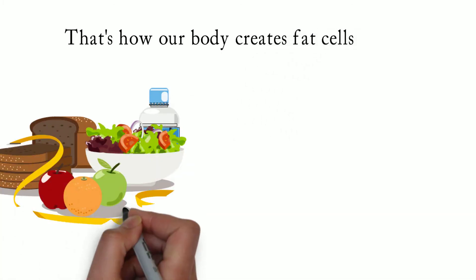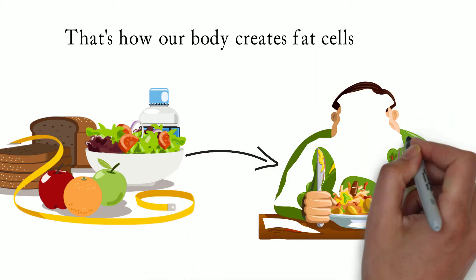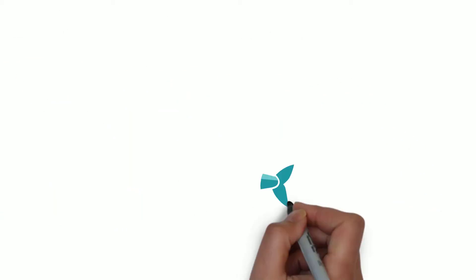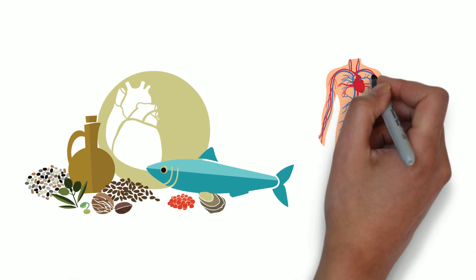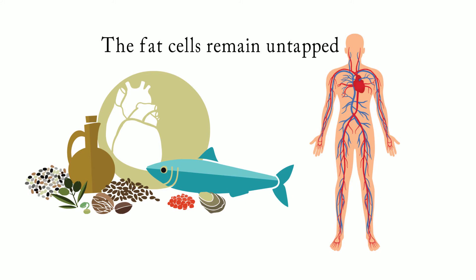The longer we keep having excess food, the more the body will accumulate fat cells, and gradually we'll become overweight and obese, if we don't stop and turn the table around. As long as we have excess energy from food in our bloodstream, regardless of the form, the fat cells remain untapped and growing.